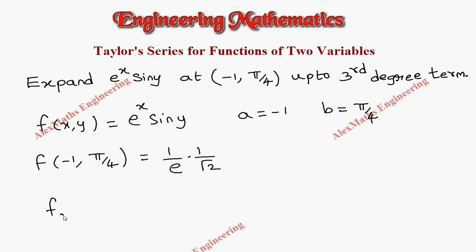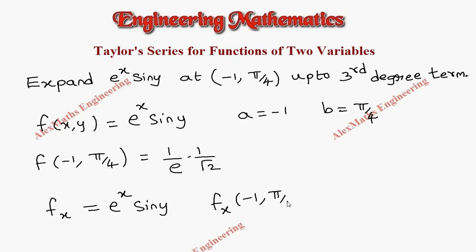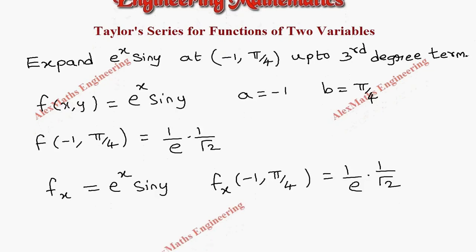Let us find fx. fx is nothing but the partial derivative with respect to x, so y is constant. E power x differentiation is e power x, and sin y is constant, so we write it as it is. So fx of the point minus 1 comma pi by 4 will give e power minus 1 is 1 by e, and sin pi by 4 is 1 by root 2.